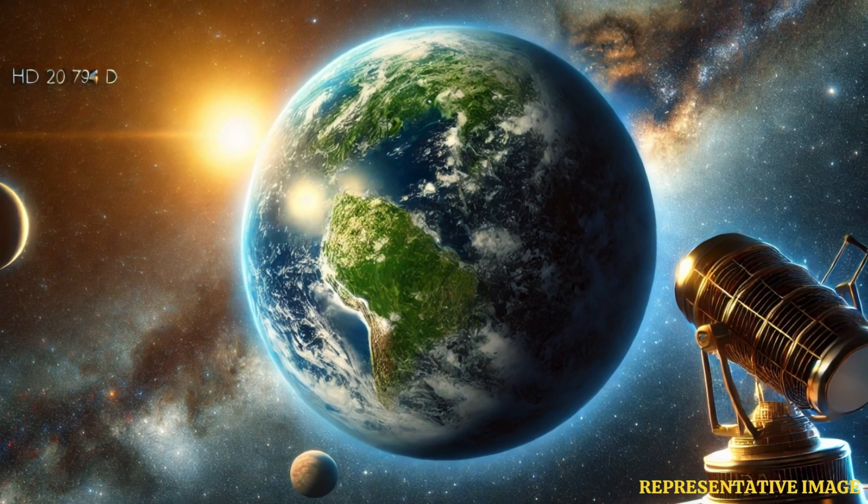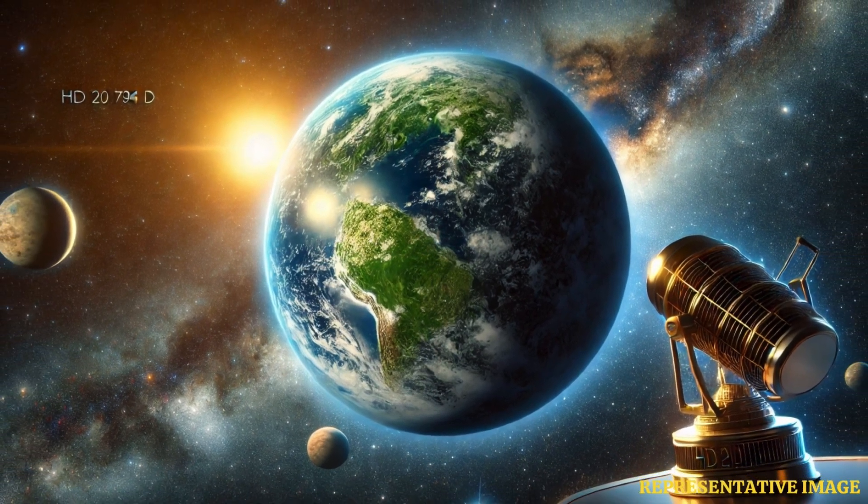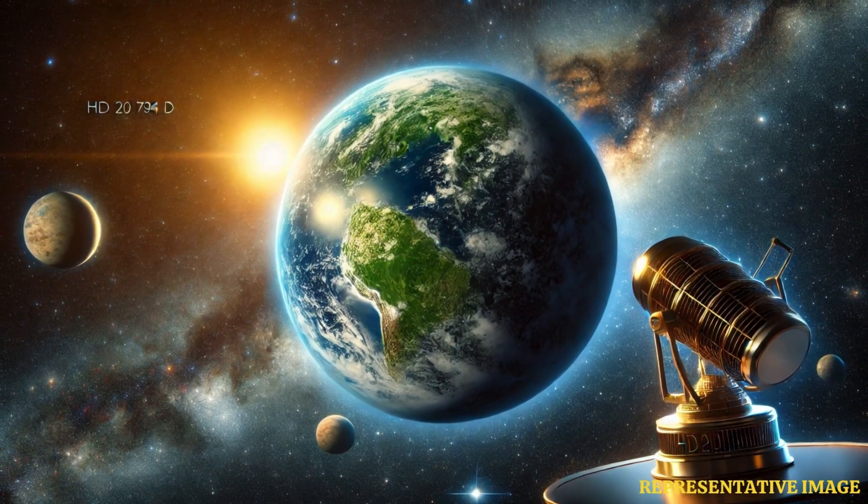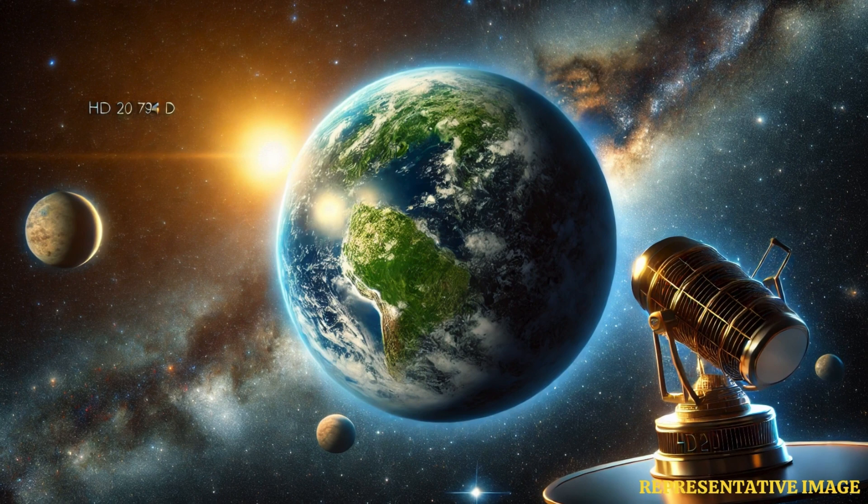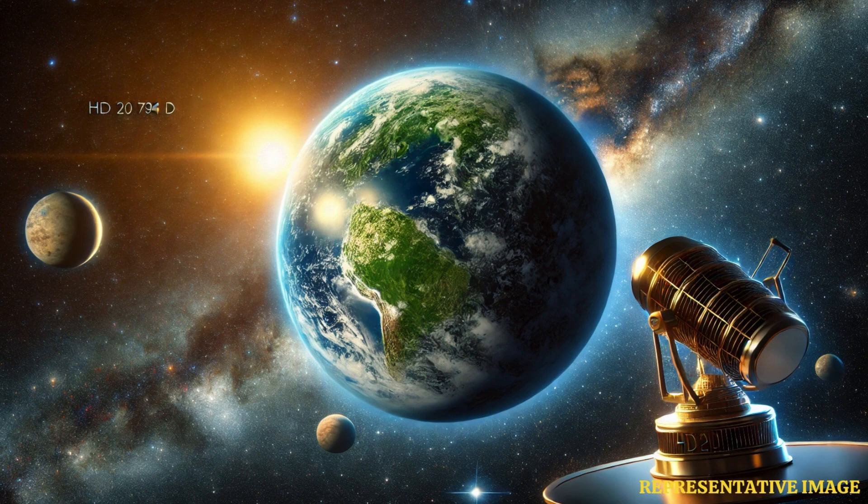Scientists looking for planets hosting life have discovered one that they believe hosts water and is strikingly similar to Earth. This body is only 20 light-years away from us and is orbiting a sun-like star. It is likely to have an atmosphere on the same scale as ours and is a super-Earth that has been named HD 2794D.